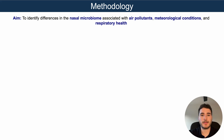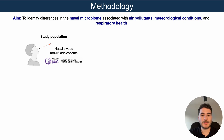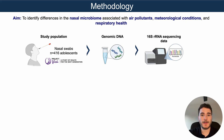The aim of this study was to identify differences in the nasal microbiome associated with air pollution, meteorological conditions, and respiratory health. We analyzed nasal swabs from 416 adolescents from the PredViva cohort, from which we isolated genomic DNA and profiled the microbiome by targeted sequencing of the 16S ribosomal RNA gene.